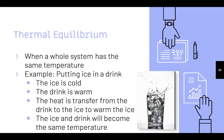Thermal equilibrium is when a whole system reaches the same temperature. For example, putting ice in a drink: the ice is cold, the drink is warm, and heat is transferred from the drink to the ice. Eventually the ice and the drink become the same temperature — you'll see the ice melt as the warmer energy overpowers the colder energy, and the drink becomes colder due to the ice.